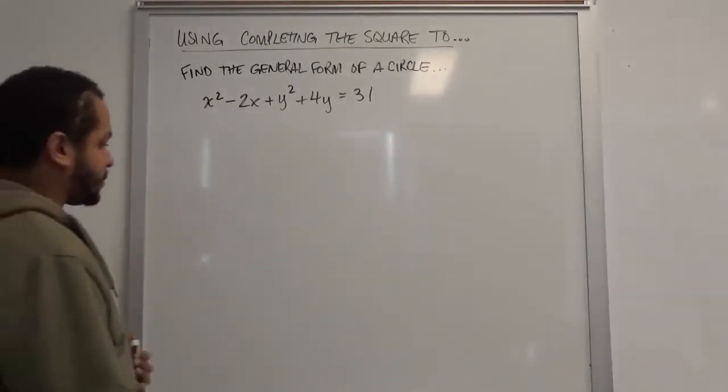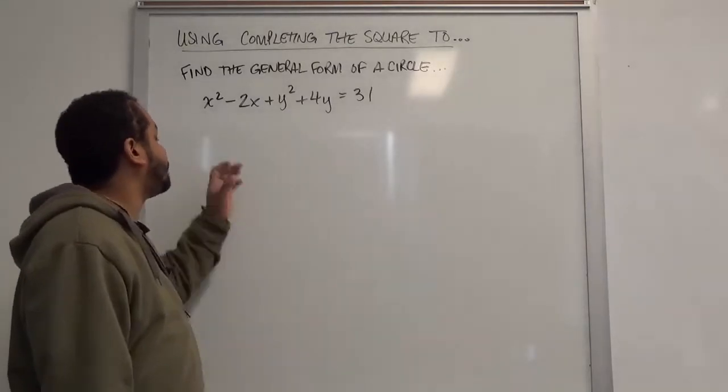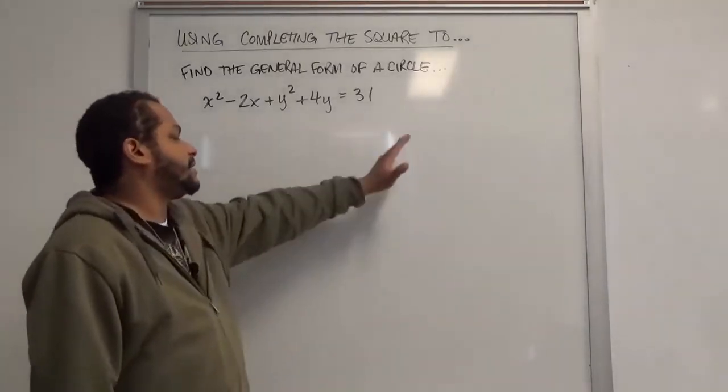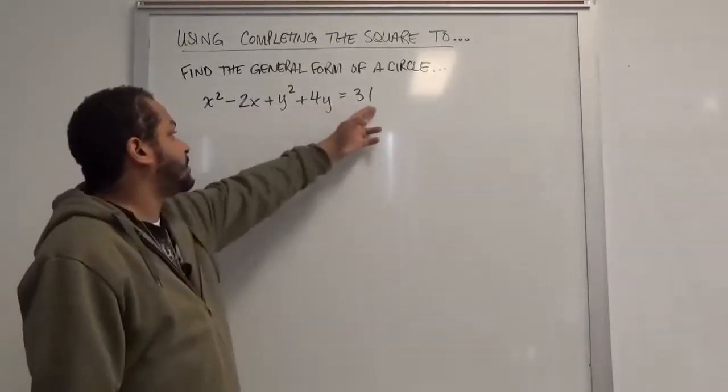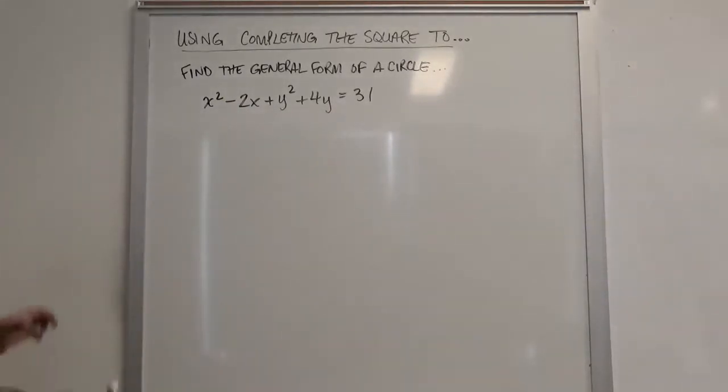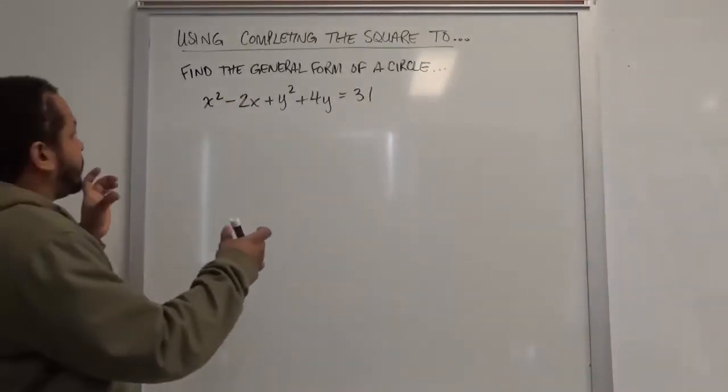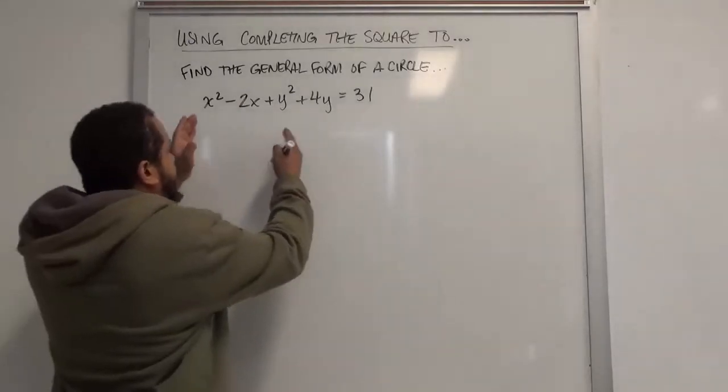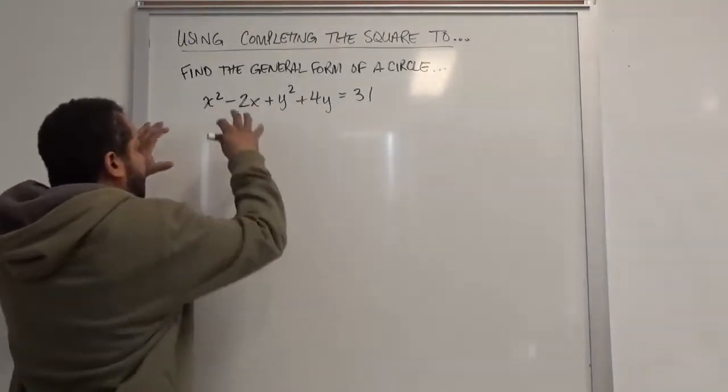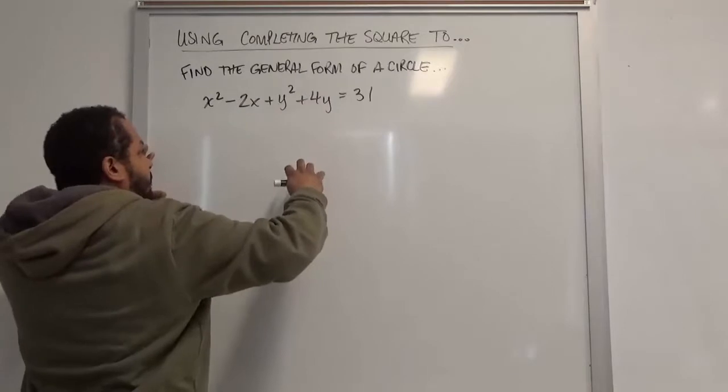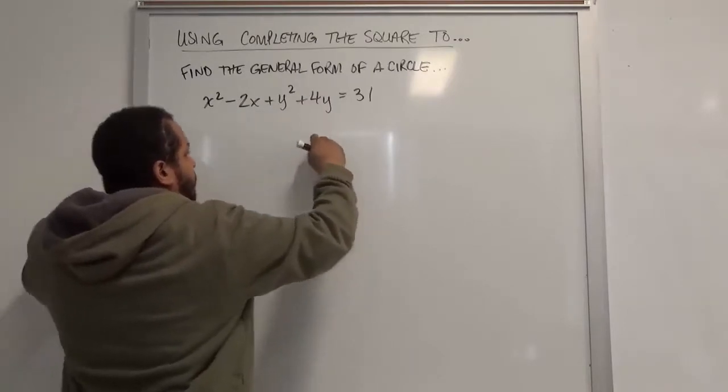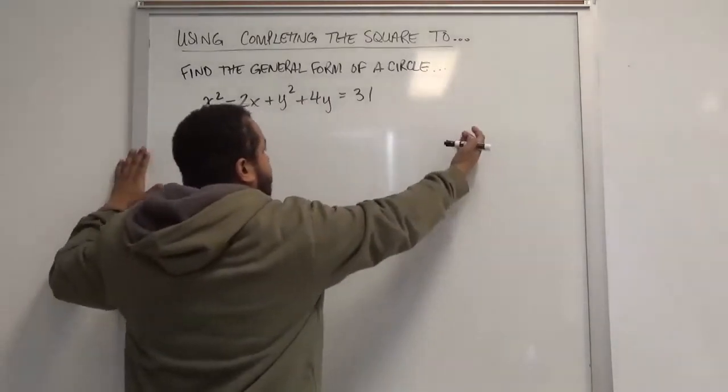This is very similar to what you're doing when you're setting the completed square equal to the constant on the right-hand side, where we see the constant is already on the right-hand side. What we want to do here is first isolate our x terms and y terms from each other so that we can complete the squares independently for each one, while adding to this side of the equation and also adding to this side of the equation.